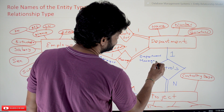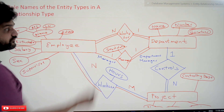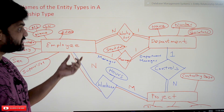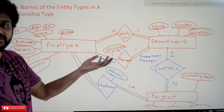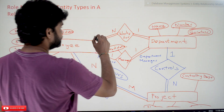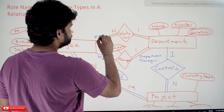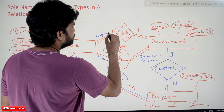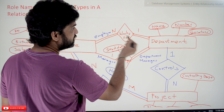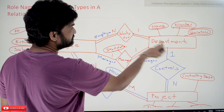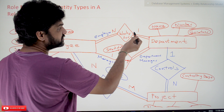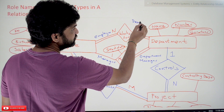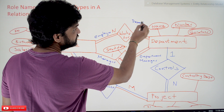For example, with respect to 'works for', what is the role played by employee? It is just 'employee'. And with respect to department in 'works for', it is just 'department'. So employee works for department.